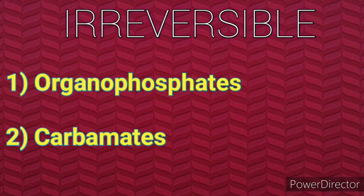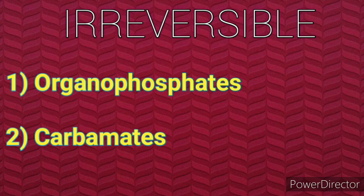Irreversible inhibitors are also classified into two groups. The first one is organophosphates and the second one is carbamates. In organophosphates, the drugs are malathion, parathion, dyflos (DFP), ecothiopate, tabun, also known as diisopropyl fluorophosphate, sarin, soman, and tabun. Among these drugs, tabun, dyflos, and soman are nerve gases, and malathion and parathion are insecticides.